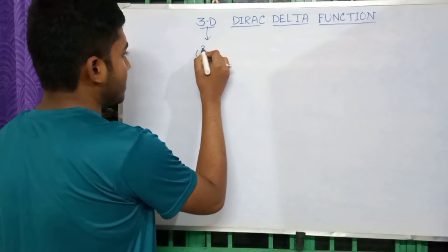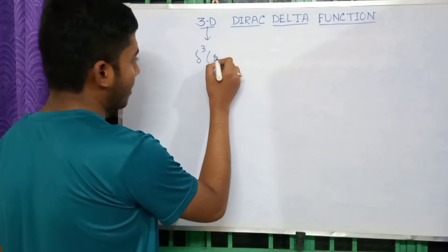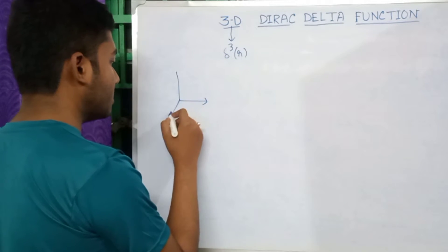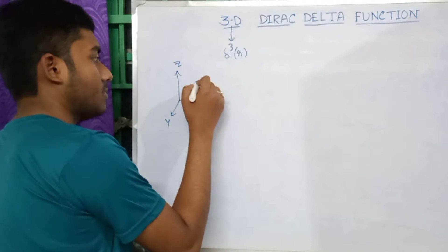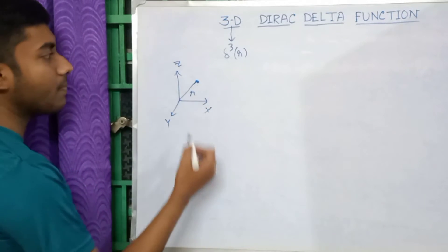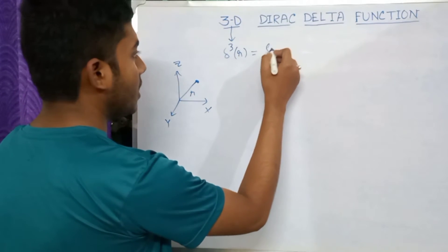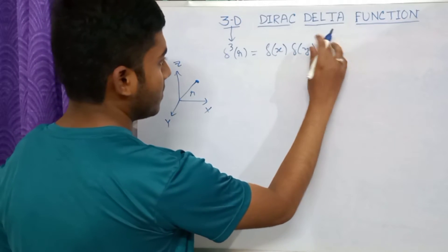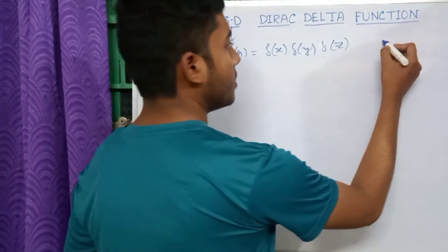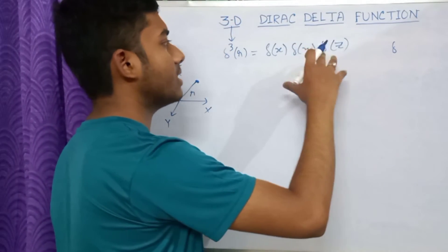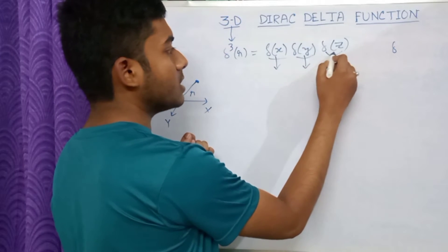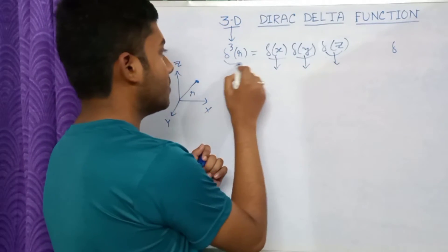The three-dimensional Dirac Delta function is denoted as δ³(r), where r is the distance from the origin to the point. In three-dimensional space with x, y, and z, r is that distance. This is defined as δ(x)·δ(y)·δ(z), because δ(x), δ(y), and δ(z) are each individually one-dimensional Dirac Delta functions.